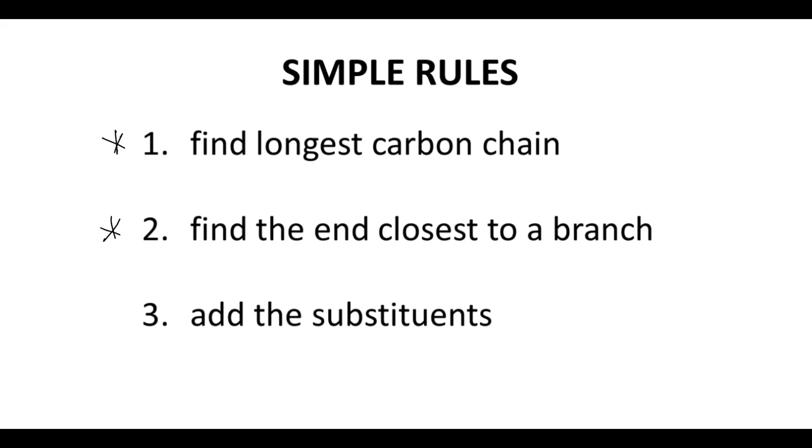Step two – we're going to find the end of the chain. Which end is closest to a branch point? This is going to determine how we number the ends of our chains. And then part number three – we simply add the substituents to our name. When we add a substituent, we have to give a number for the position of that substituent as well as the name that indicates the type of substituent.